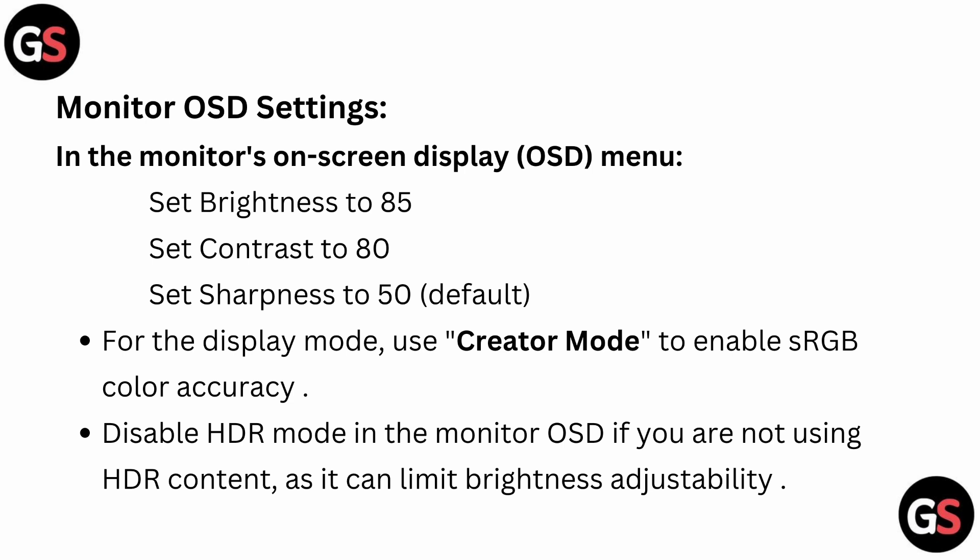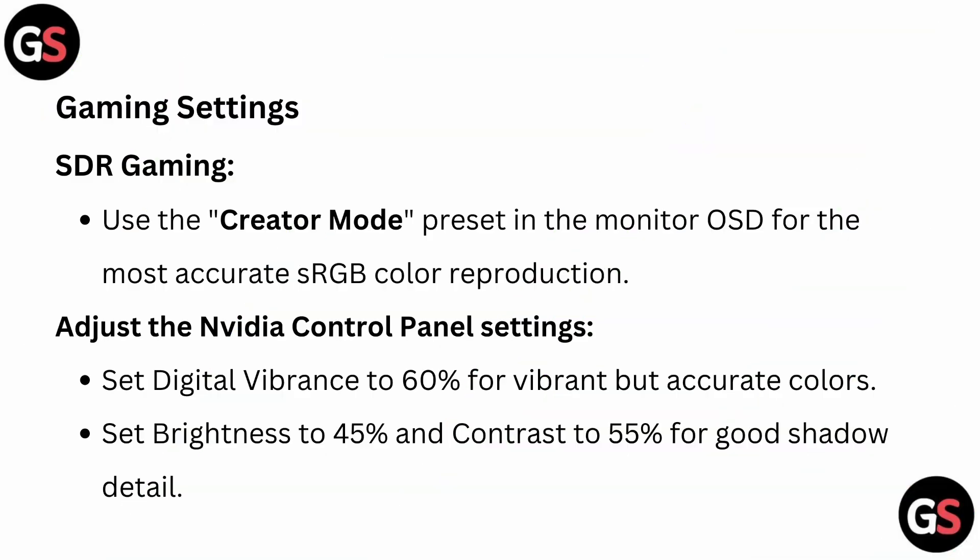Disable HDR mode in the monitor OSD if you are not using HDR content, as it can limit brightness adjustability. For SDR gaming, use Creator Mode in the monitor OSD for the most accurate sRGB color reproduction.